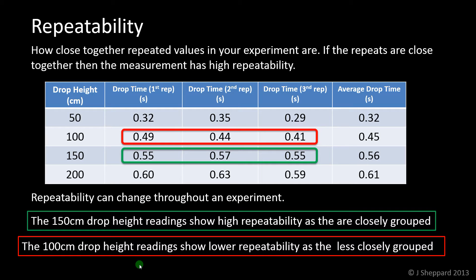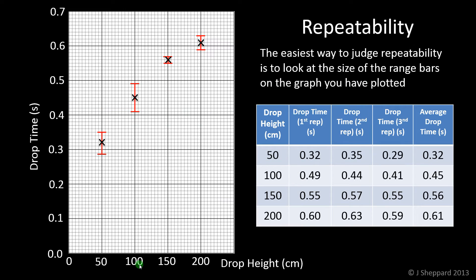It's difficult to judge repeatability in isolation. It's easier to comment on changes in repeatability during the experiment. One other way to do it, which is very useful, is to look at the range bars in your graph when you plot the data. Here's that same data plotted on a graph with range bars. You can clearly see that the highly repeatable set produces a very small range bar.